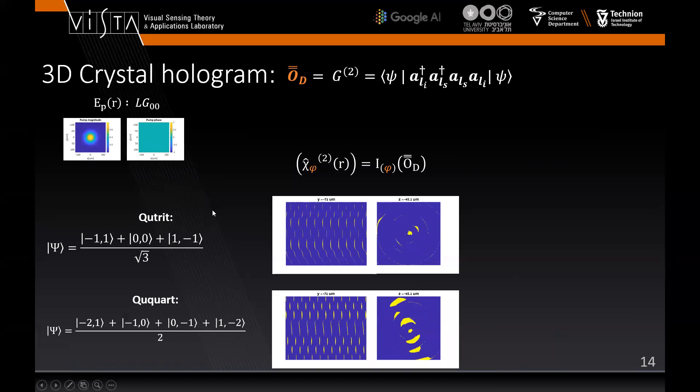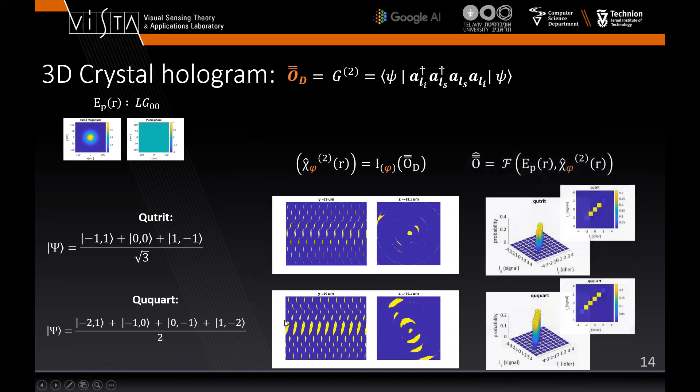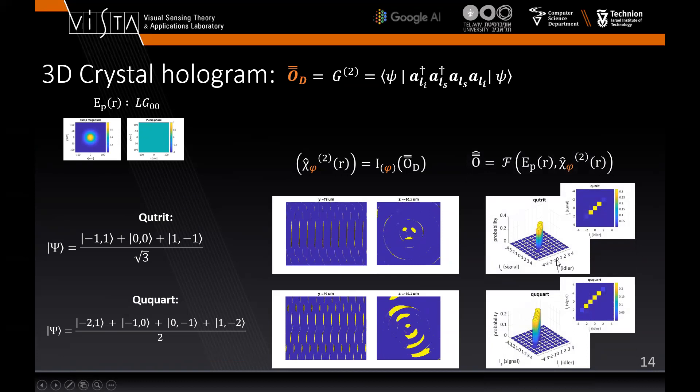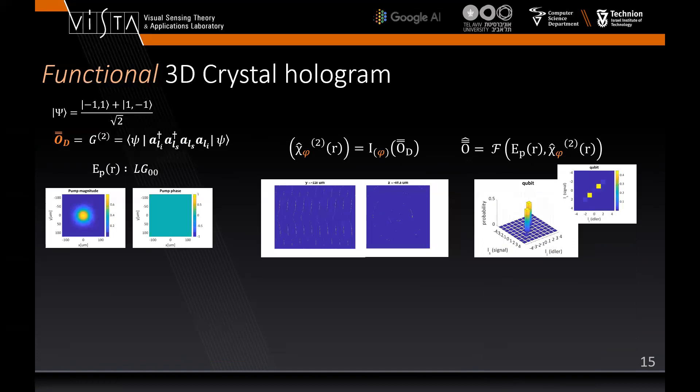In these examples, we take the pump to be a Gaussian and we learn the 3D holograms that yield the coincidence rates obtained by the qutrit and quart on the left. Then we use the learned crystal and the given pump to observe the approximated coincidence rates. The diagonal structure with uniform probabilities at the state subspace is in line with our expectations.